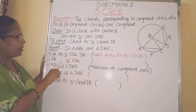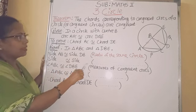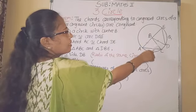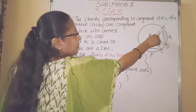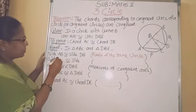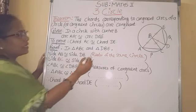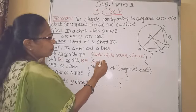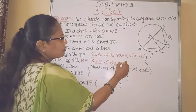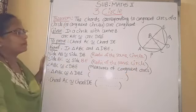Next statement we have to fill: side BC is congruent to side BE. These are also radii of the same circle. So, we have two pairs of corresponding sides that are congruent.